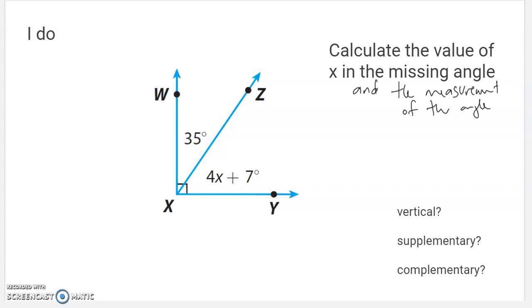All right. So first is just look at it, and I'm going to say, okay, what do I have here? I've got a 35-degree angle, and then I've got this very weird algebraically represented angle, 4x plus 7 degrees, and we want to find x. What is that equal to? Find the value of x in the missing angle, and then I also add it on. Let's just go ahead and find the measurement of this angle.